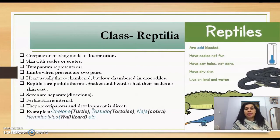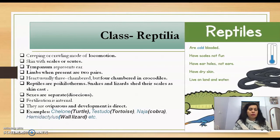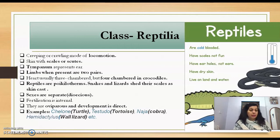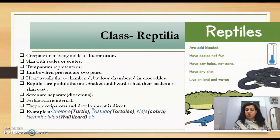Class Reptilia are characterized by creeping or crawling locomotion. Their skin has scales or scutes. A tympanum represents the ear. Limbs, when present, are two pairs. The heart is usually three-chambered, but four-chambered in crocodiles — this is an important exception. Reptiles are poikilotherms. Snakes and lizards shed their skin (skin cast). Sexes are separate (dioecious), fertilization is internal, they are oviparous, and development is direct without an intermediate larval stage. Examples: Chelone (turtle), Testudo (tortoise), Naja (cobra), and Hemidactylus (wall lizard).